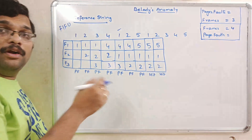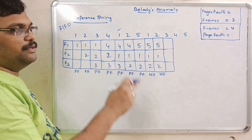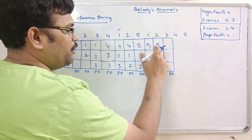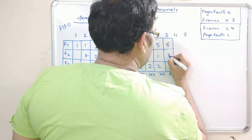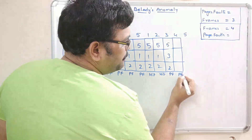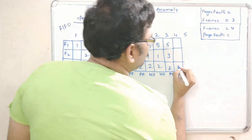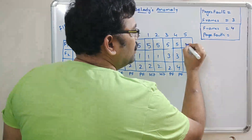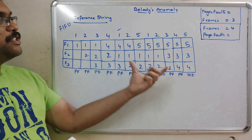Page 3 is not available — page fault. Among frames 5, 1, 2, page 1 is the oldest after 5, so page 5 is replaced: frames become 3, 1, 2. Actually, FIFO order gives us frames 5, 3, 2. Page 4 is not available — page fault. Among frames 5, 3, 2, page 2 is the oldest, so it is replaced with 4. Finally, page 5 is already available — a hit, no replacement needed.